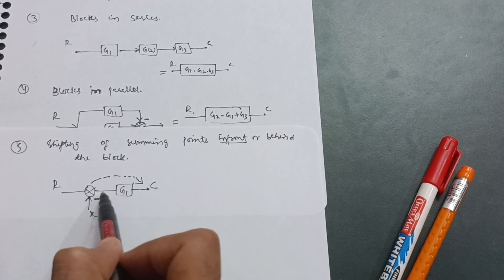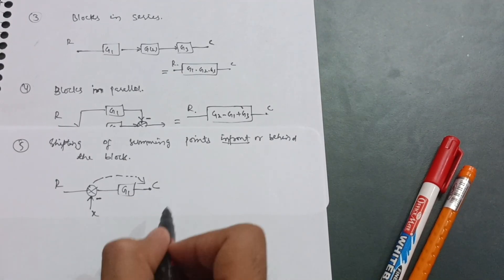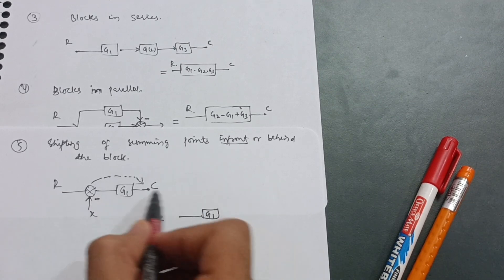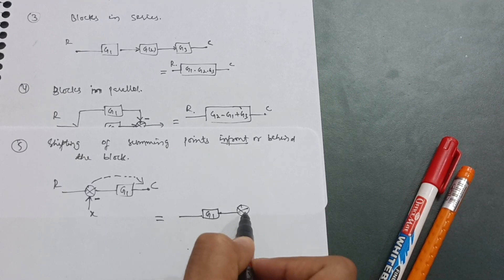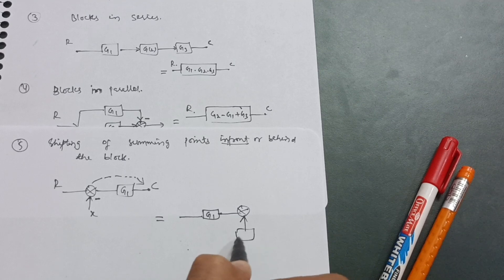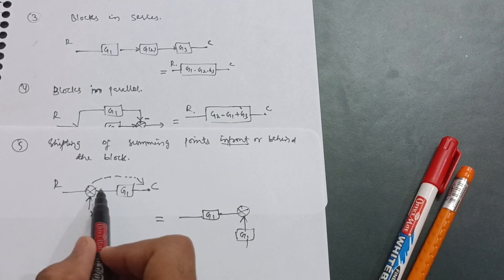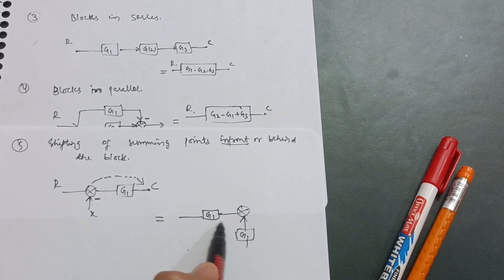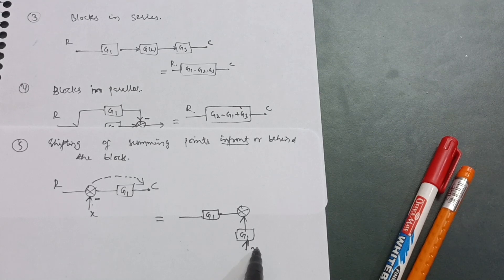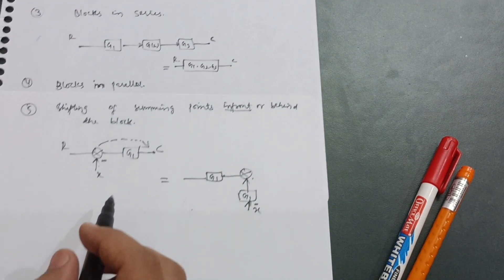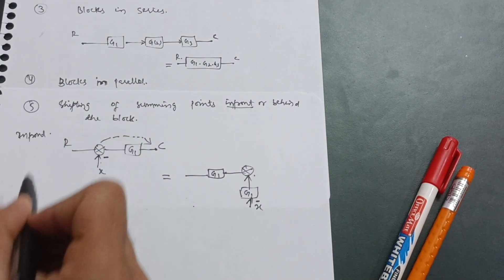When you move the summing point in front of G1, you first write G1, then place the summing point in front of it. Whenever you are shifting the summing point in front of the block, you have to add the block value G1 with the feedback value X. So the feedback X gets an additional G1 block value multiplied with it.